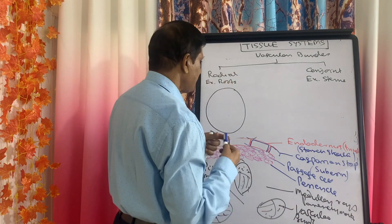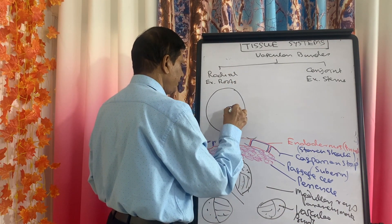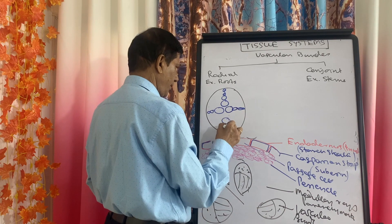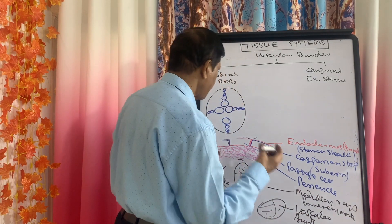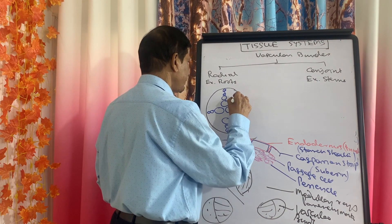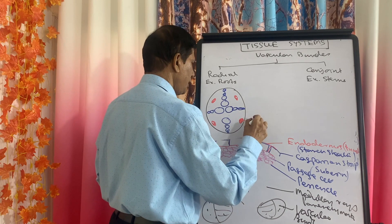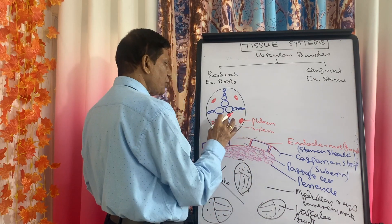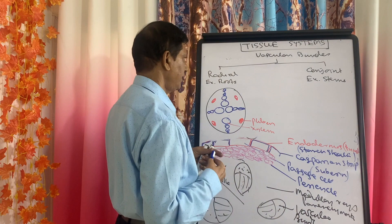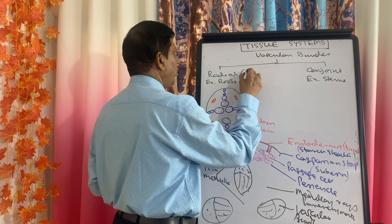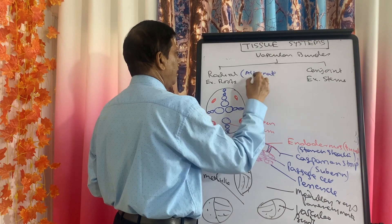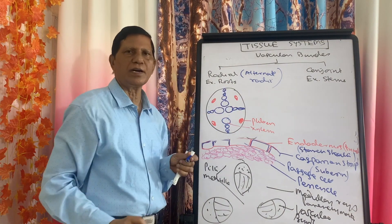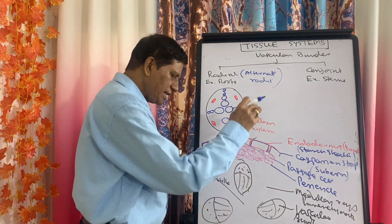In the radial type of vascular bundle, found in roots, the xylem and phloem are present in alternate patches — that is, in alternate radii. This arrangement is characteristic of roots only.